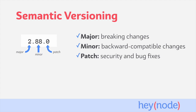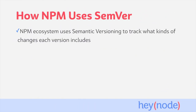Patch versions are for small, backwards compatible changes for things that are already in the package. This could be for fixing security issues, bugs, typos, or any other small change concerning existing code. The NPM ecosystem uses semantic versioning to track what kind of changes you can expect from each new version of a package.